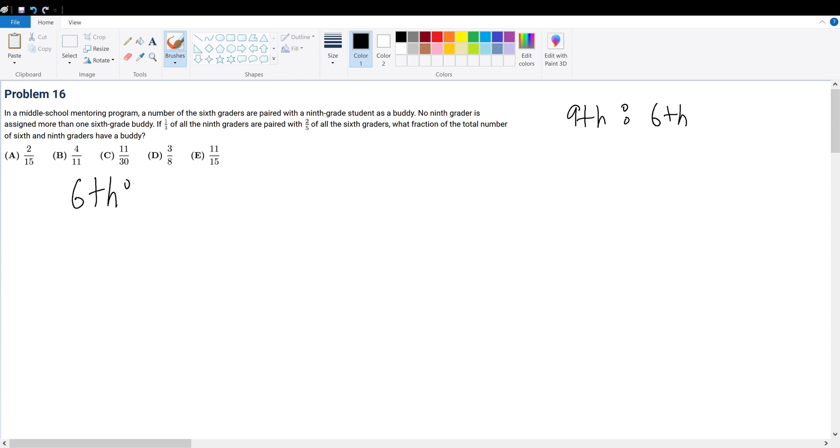Let's assume that the total number of 6th graders is x. For 9th graders, that's y. So what are we trying to find here? We're trying to find the fraction of the total number of 6th and 9th graders that have a buddy.